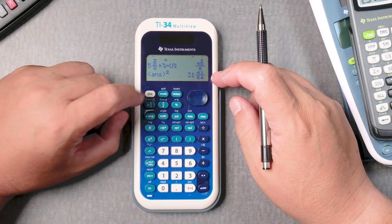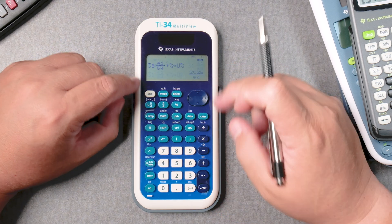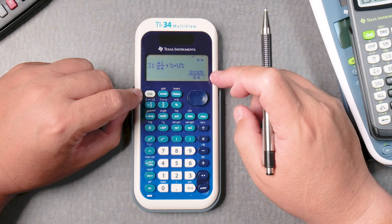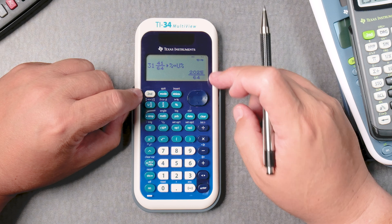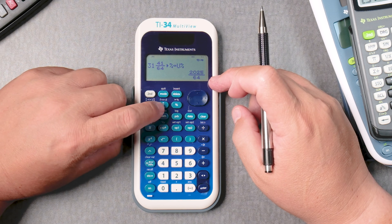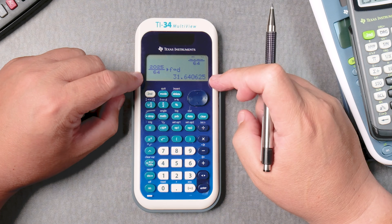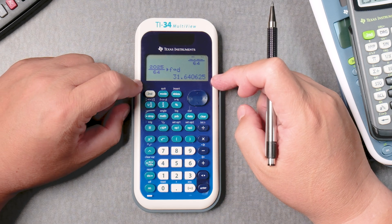And then you can say second U and D, and it gives you the improper fraction, and then second N D if you wanted to give you the decimal version. So there's many steps you can take.